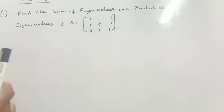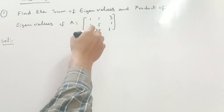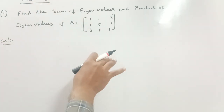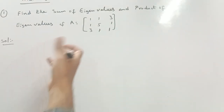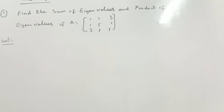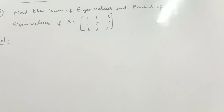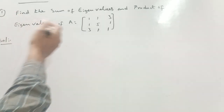This problem will come as a short answer. Many students earlier calculated all eigenvalues, then added them to get the sum, and multiplied them to get the product. But for two marks, there's no need for such a lengthy procedure. So how do we solve it?